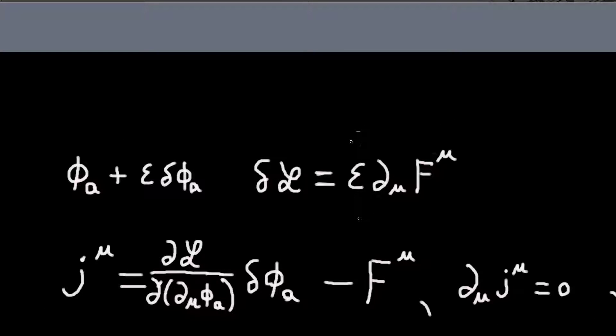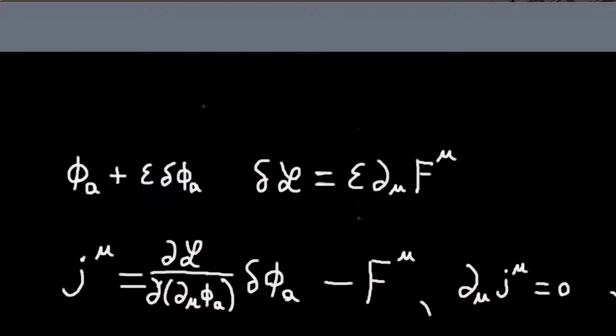In this video I wanted to talk about Noether's Theorem and Conserved Currents. So basically, if we vary the fields, and the Lagrangian, the corresponding variation in the Lagrangian can be written as the total derivative of some thing f,